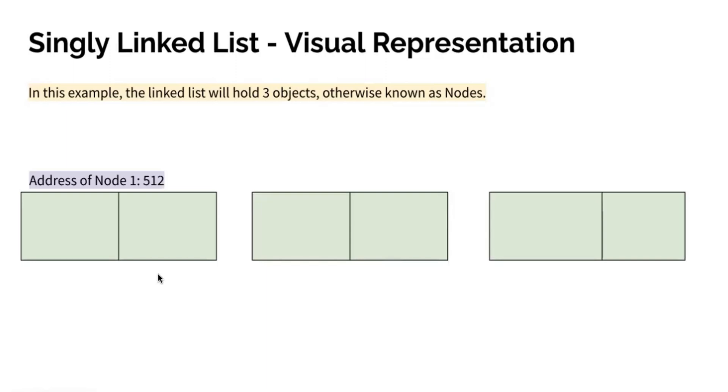Next, we will have the address of node one. In this example, we're using 512. And now let's say the address of node two is 32. And lastly, we have the address of node three, we're saying it's going to be 220.